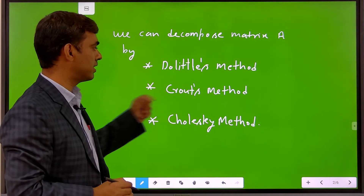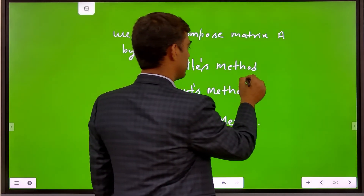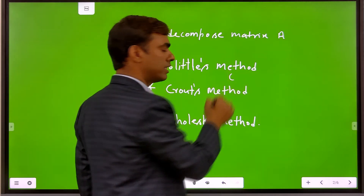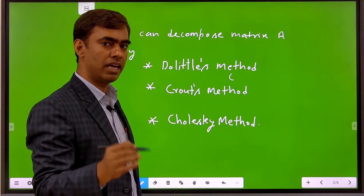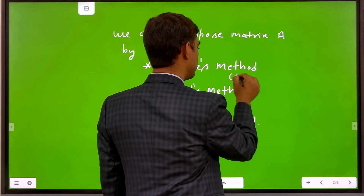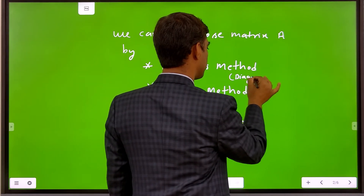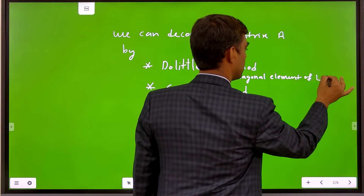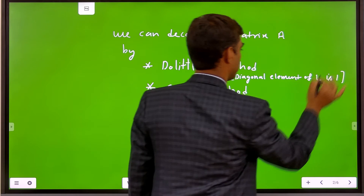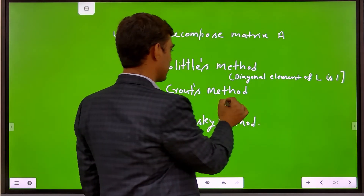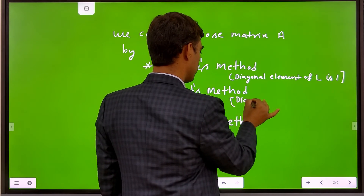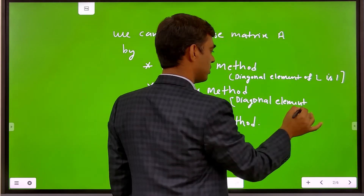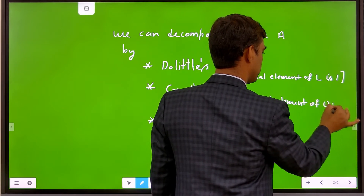What is the difference between Doolittle's method and Crout's method? In Doolittle's method, we decompose matrix A as L and U, but in the lower triangular matrix the diagonal elements of L are 1. In Crout's method, the diagonal elements of U are 1.